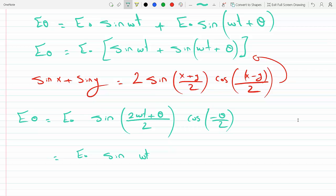Sine two omega t plus theta over two, cosine their difference, minus theta over two. And so this will become 2E0 sine. This could be rewritten as omega t plus theta over two.